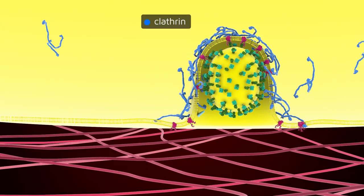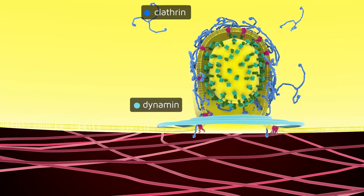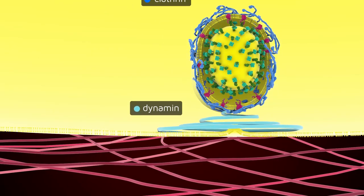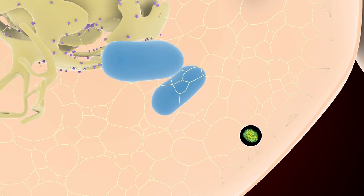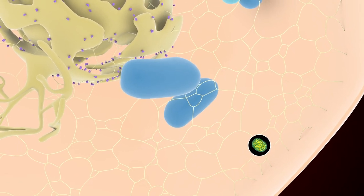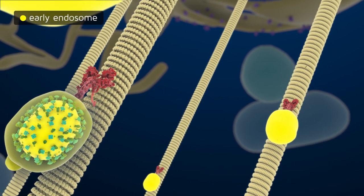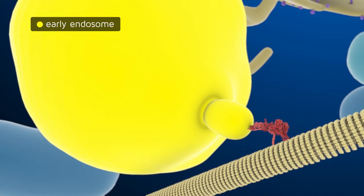A vesicle coated with clathrin is formed and released into the cytoplasm. Transport vesicles are driven by molecular motors inside the cell where they fuse with early endosomes.